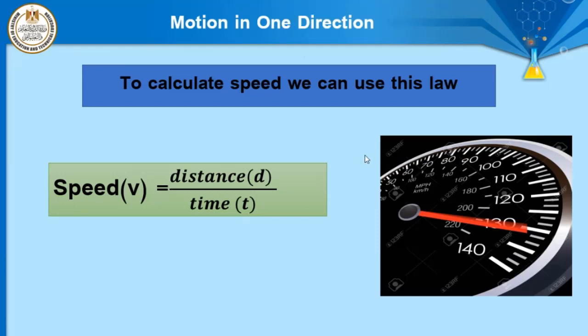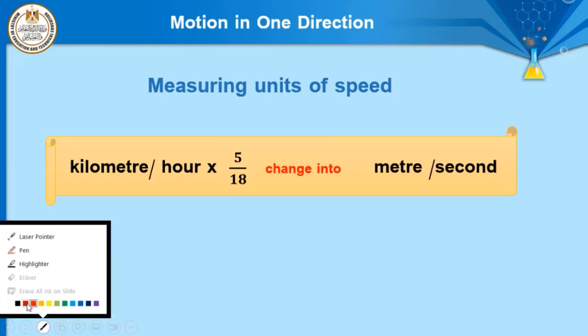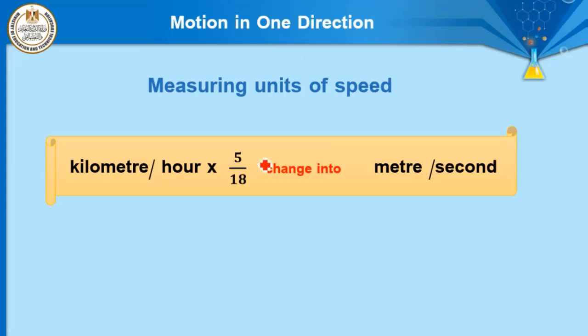Speed can be measured by a speedometer. In front of you there is a figure representing a speedometer, which is found in the course. What are the measuring units of speed? Number one: kilometer per hour. Number two: meter per second. These are not the only measuring units — we also have kilometer per second and meter per minute, but kilometer per hour and meter per second are the most commonly used.